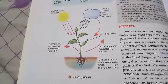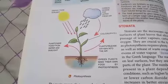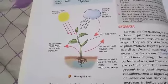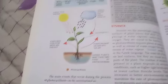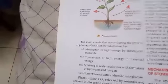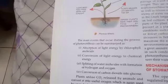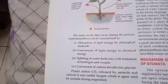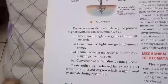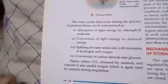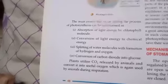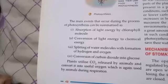Chlorophyll is present in the leaves, and by the process of photosynthesis the plant prepares its own food. The main events during photosynthesis can be summarized as: absorption of light energy by chlorophyll molecules, conversion of light energy to chemical energy, and splitting of water molecules.